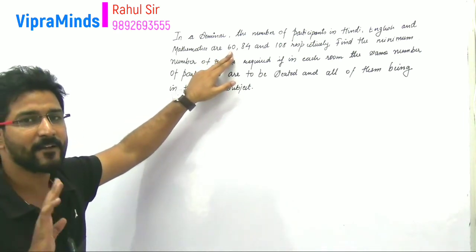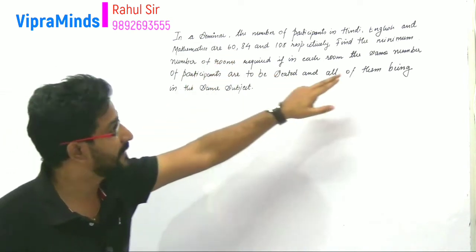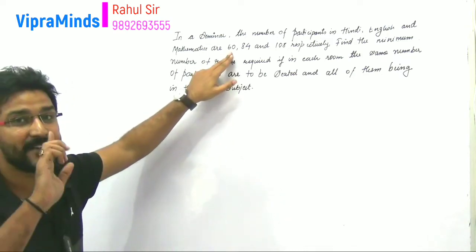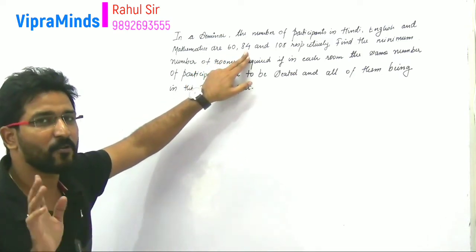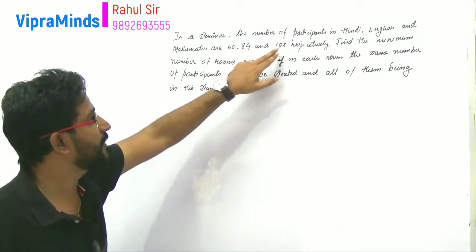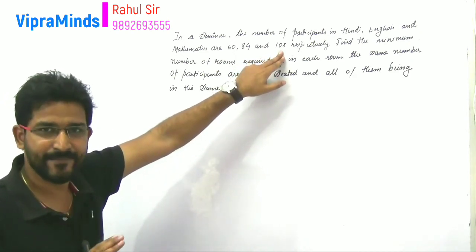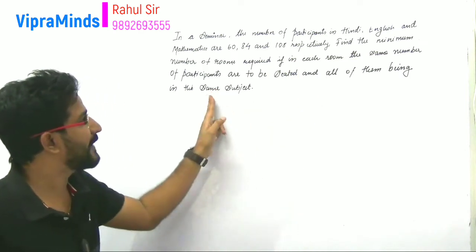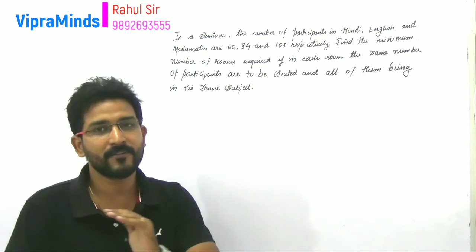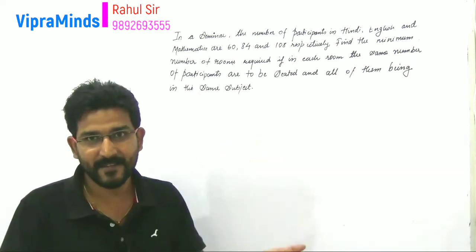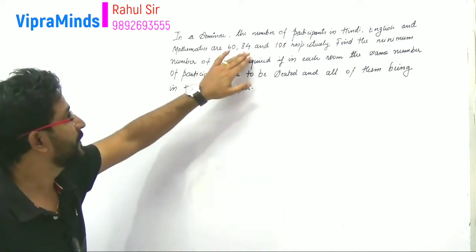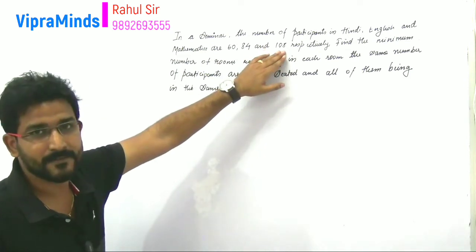The same number condition will be fulfilled and the same subject condition will be fulfilled, but I will need 30 rooms if there are 2-student groups. If there are 42 groups I will need 42 rooms, and 54 groups means 54 rooms. These two conditions will be fulfilled but the minimum number of classrooms condition will not. If I make groups of 3, then there will be 20, 28, and 36 groups respectively.